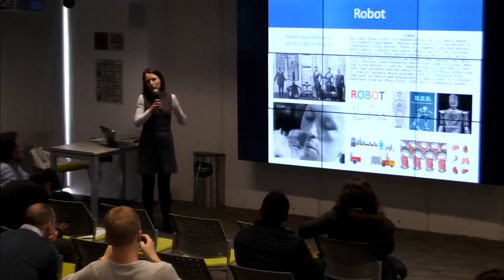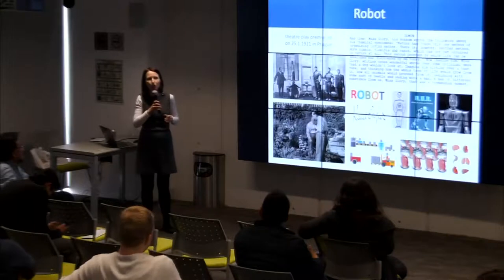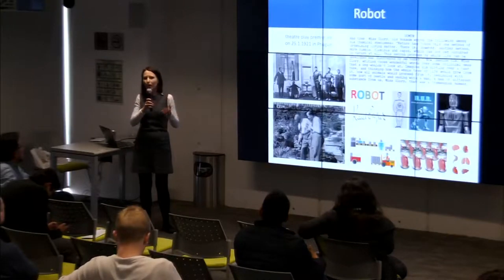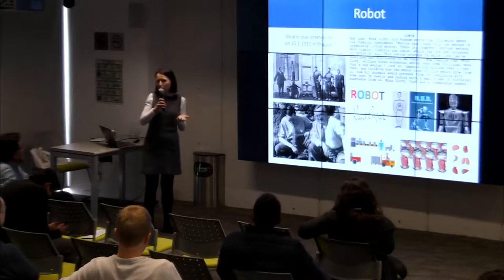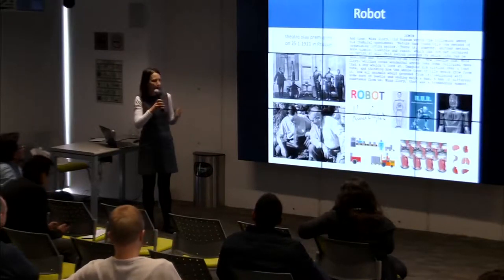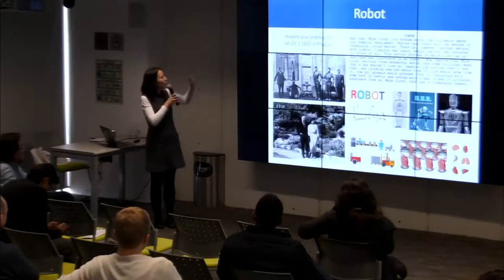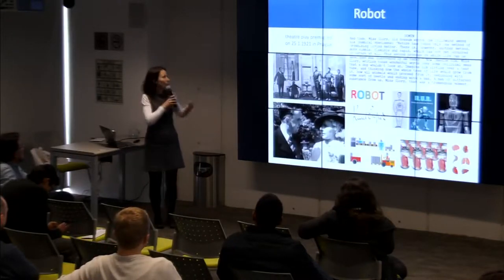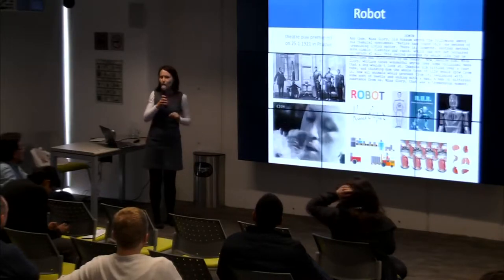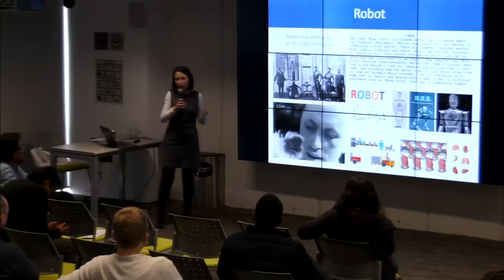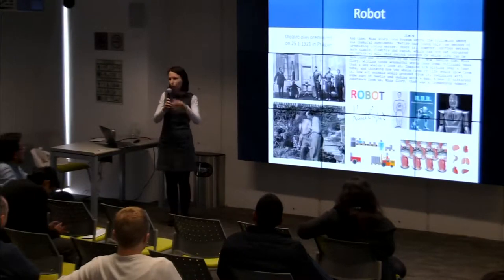We are much more modest — we don't want to create artificial human beings. We want to prepare something like artificial cells, and we call them liquid robots or chemical robots. The message for you is that the theatre play premiered on 25th of January 1921 in Prague, so for some of you it may be totally new information that the word 'robot' comes from Czech language.